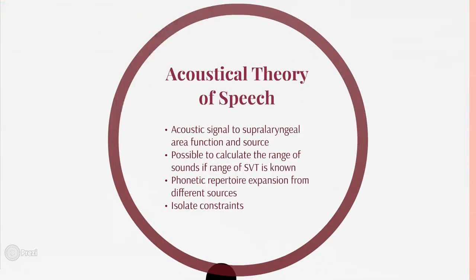Consonants are caused by transitions or rapid changes in formant frequency. The source for consonants might be air turbulence — if you say the letter P, you can feel the way the air changes as it flows from your mouth. The acoustic theory of speech was used to analyze the specimens and determine how capable they would be of producing speech. The acoustic signal, supralarygneal area function, and source are used to calculate the possible range of sounds if the SVT range is known. The phonetic repertoire expands from different sources, and using this they can isolate the constraints — this was the basis of the study.